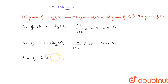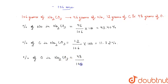Percentage of oxygen in sodium carbonate will be 48 divided by 106 into 100, which will give the value 45.28 percent.